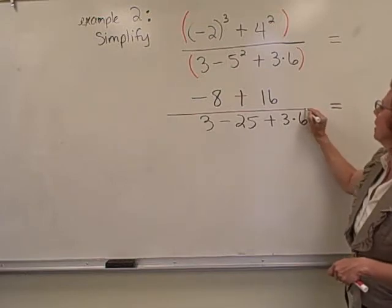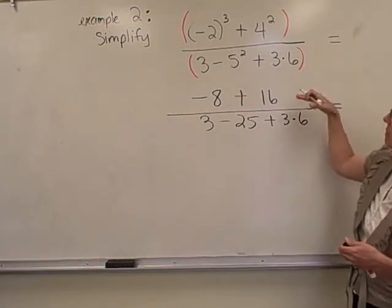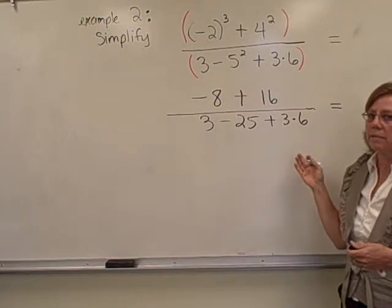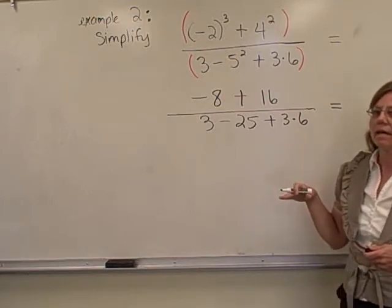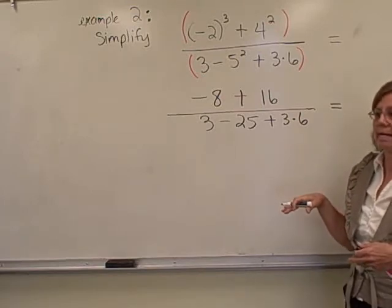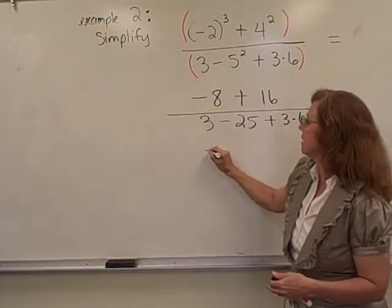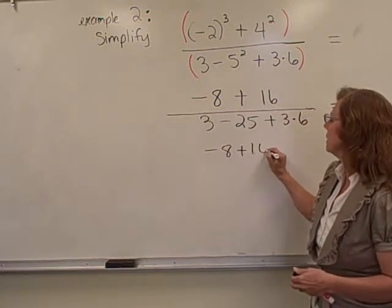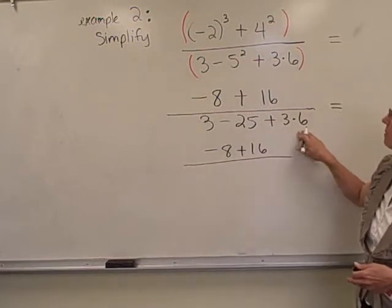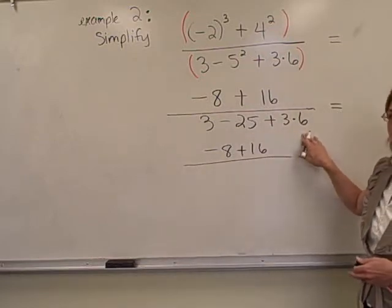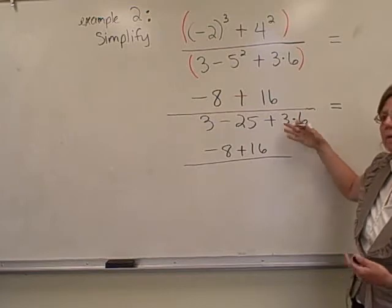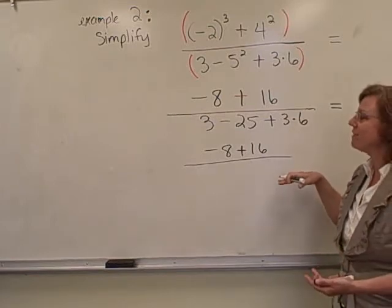So within my grouping symbol, numerator and denominator, I've just taken care of exponents. So now I'm going to move down and take care of any multiplying or dividing. Well the numerator, I don't see any of those, so down in the denominator, I'm going to just take care of the 1 multiplication, 3 times 6.